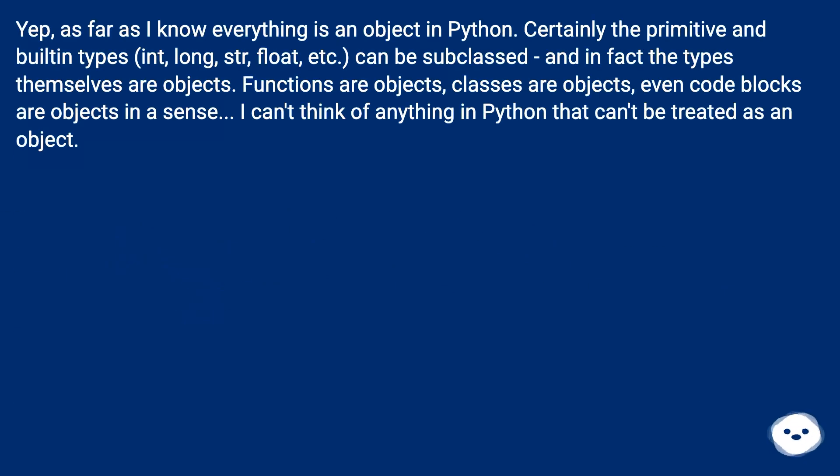Yep, as far as I know everything is an object in Python. Certainly the primitive and built-in types int, long, str, float, etc., can be subclassed and in fact the types themselves are objects. Functions are objects, classes are objects, even code blocks are objects in a sense. I can't think of anything in Python that can't be treated as an object.